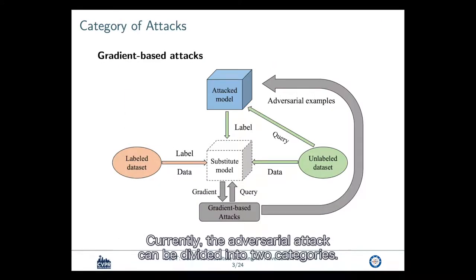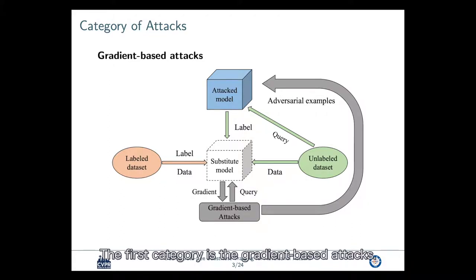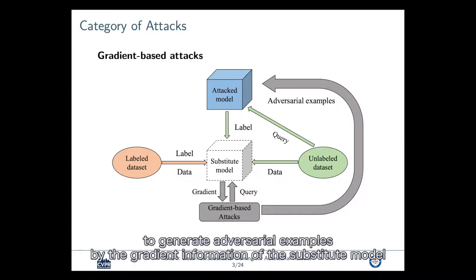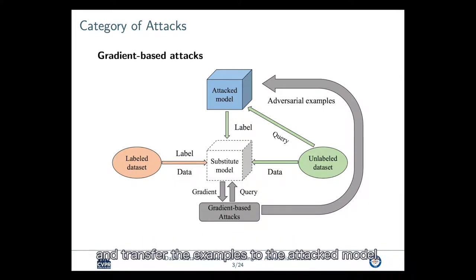Currently, the adversarial attack can be divided into two categories. The first category is the gradient-based attacks. In black box setting, the gradient-based attack need to use a subsidial model to generate adversarial examples by the gradient information of the subsidial model, and transfer the examples to the attacked model.